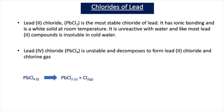Lead 4 chloride, PbCl4, is unstable and readily decomposes to form lead 2 chloride and chlorine gas. The reason this happens is because the plus 2 oxidation state of lead is more stable than plus 4. This is because of the inert pair effect, which becomes stronger down group 4, and that's why the plus 2 oxidation state is the most stable.